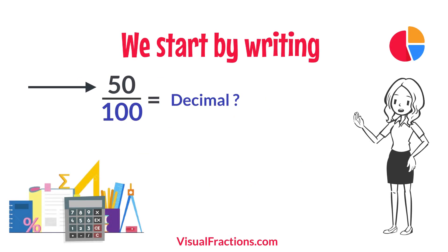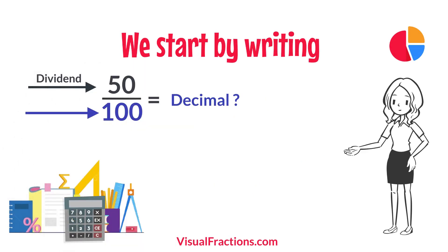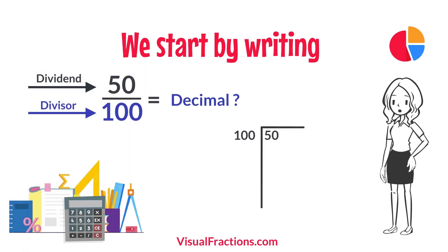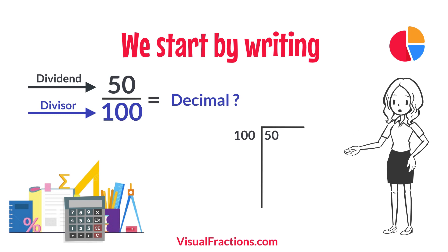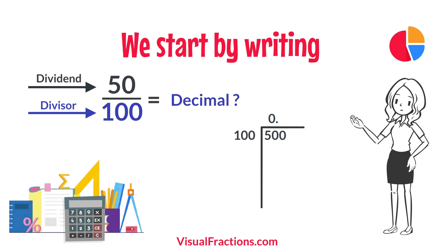we start by writing 50 as the dividend and 100 as the divisor. Since 100 doesn't fit into 50, we add a decimal point in our answer and append a 0 to 50, making it 500.